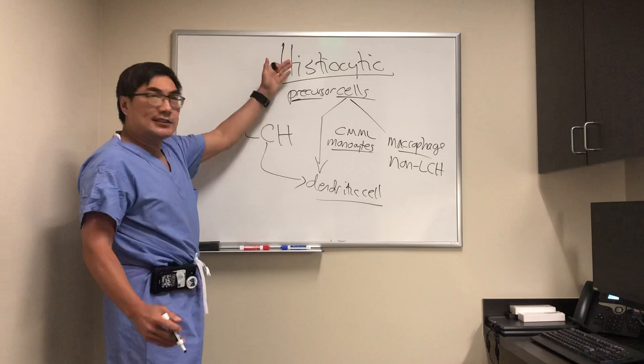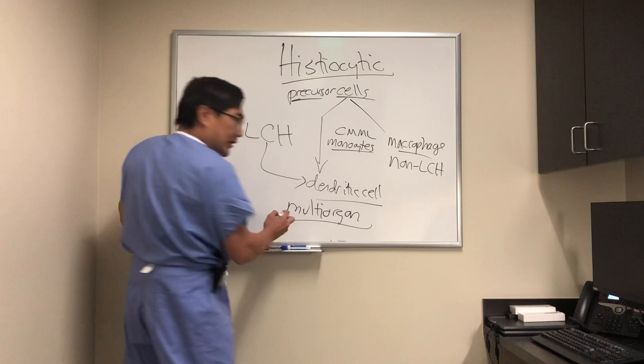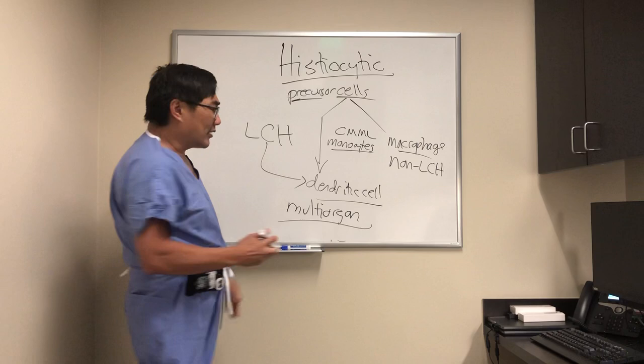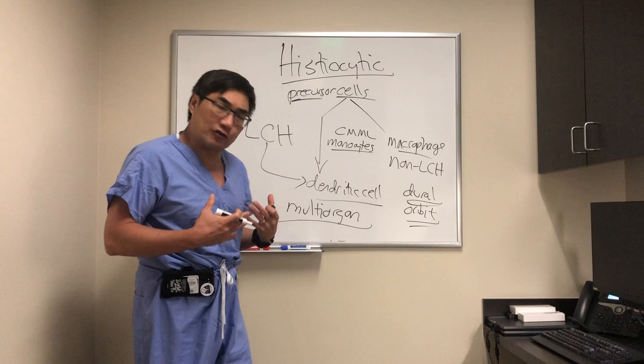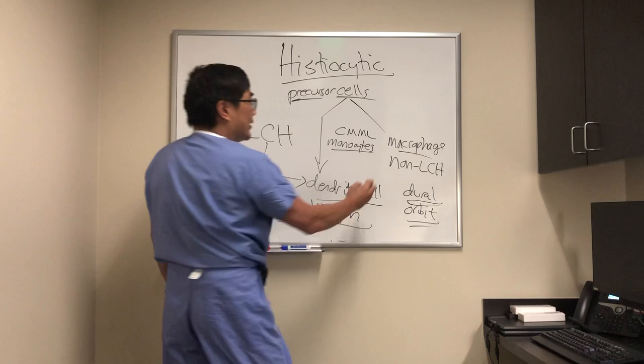The way these disorders come to us is that, even though both types can cause histiocytic infiltration in multiple organ systems — including the heart, lungs, and retroperitoneum — the ones that come to us are the dural-based ones and those that affect the orbit. The dural-based ones can produce optic neuropathies or cranial neuropathies presenting as double vision or loss of vision. The orbital ones come to us as a bilateral mass.